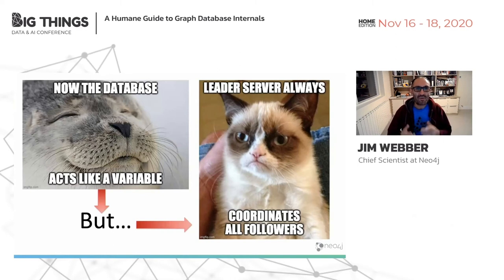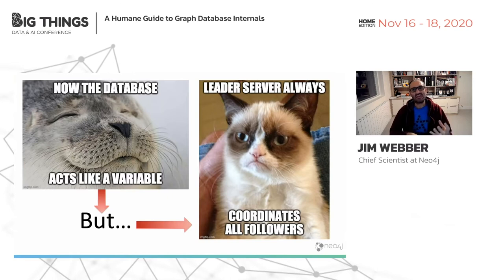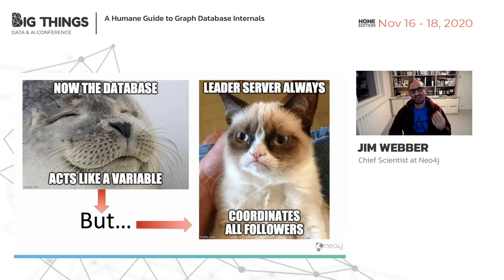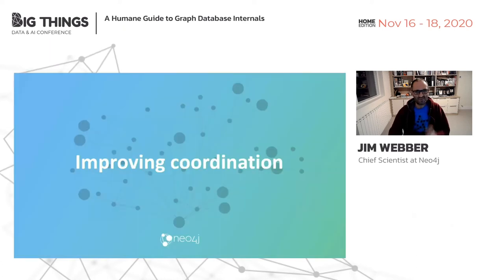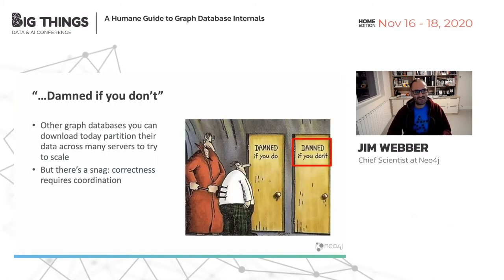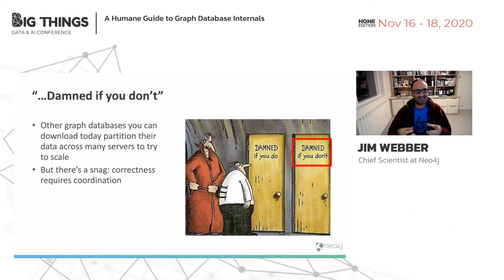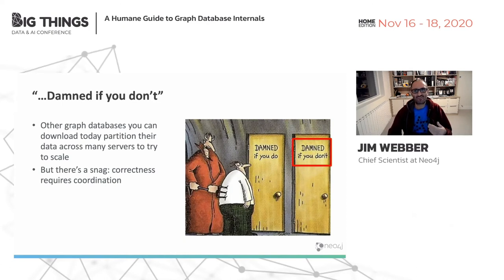So the database acts like a variable — none of this thread.sleep(2000) going on. But we do have a problem: the leader in Raft always coordinates all of the followers, and that coordination is potentially expensive, potentially a bottleneck. If I want a cluster with a thousand servers, waiting for 501 responses before considering something committed might be onerous. Other databases partition their data to try to scale across many servers. But there's a real snag: correctly storing the data without corruption requires coordination.